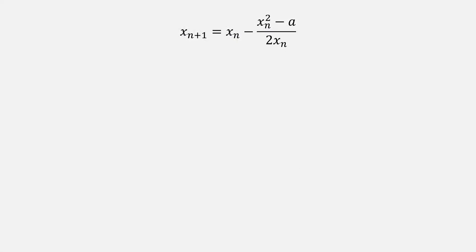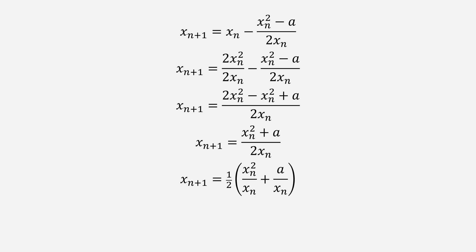When we plug in the function x squared minus a into Newton's method, we can make that first x term match the denominator, and then combine the two fractions, which we can then perform a subtraction. Afterwards, we can break that up and factor out a half, leaving us with this equation for square root. And yes, it is a plus.